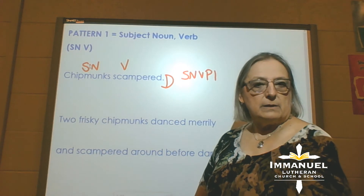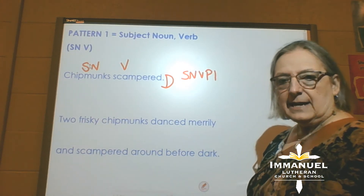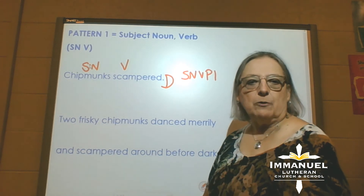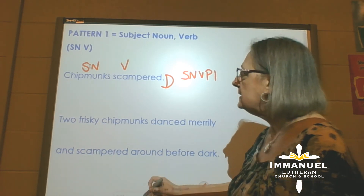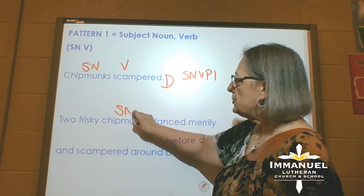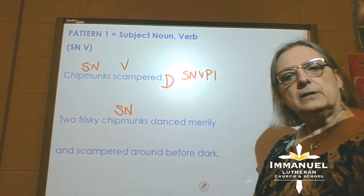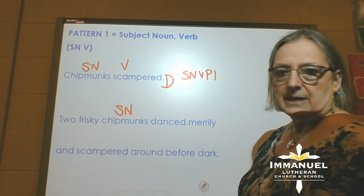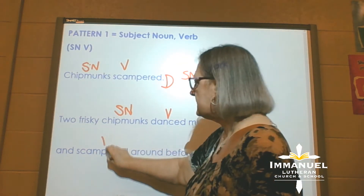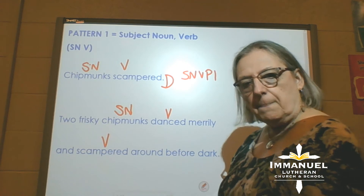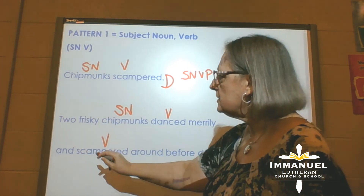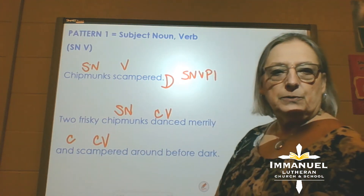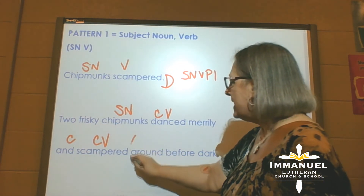Now the first sentence question is always who or what? So I'm going to say: what danced and scampered merrily around before dark? My answer is still chipmunks — subject noun. Then I ask, what is being said about chipmunks? And when I look back, I see they're doing two things — chipmunks danced and scampered. We learn a little bit later on that and is a connecting word — it's a conjunction — to give us compound verbs. We continue on to the end of the sentence. Around. Around is a preposition.